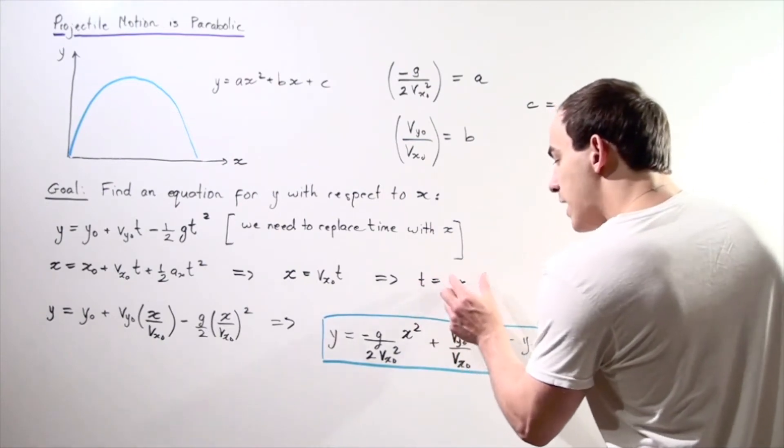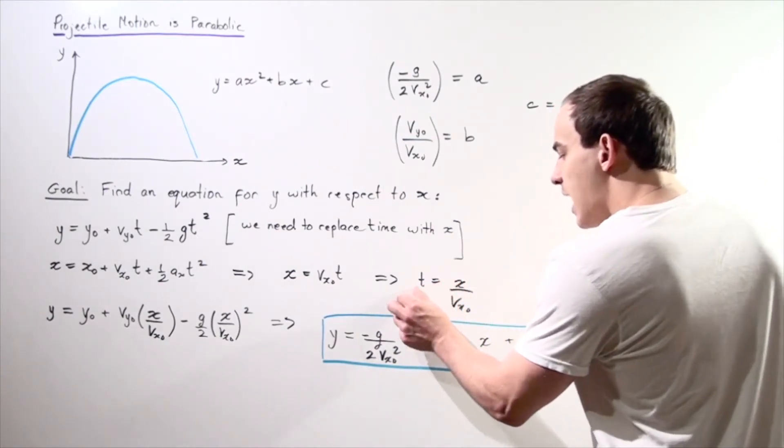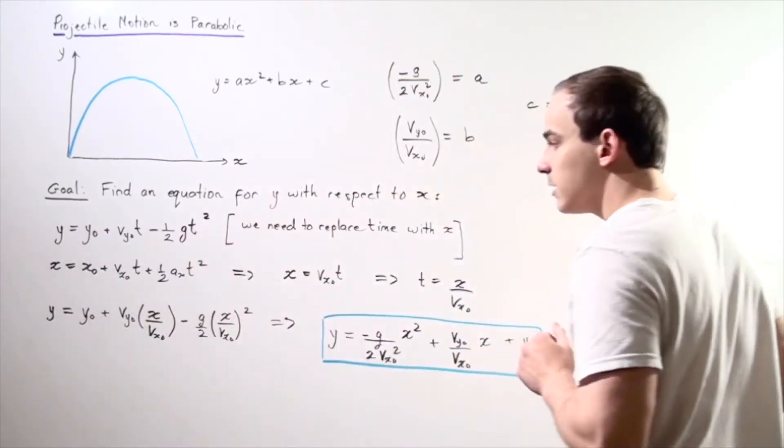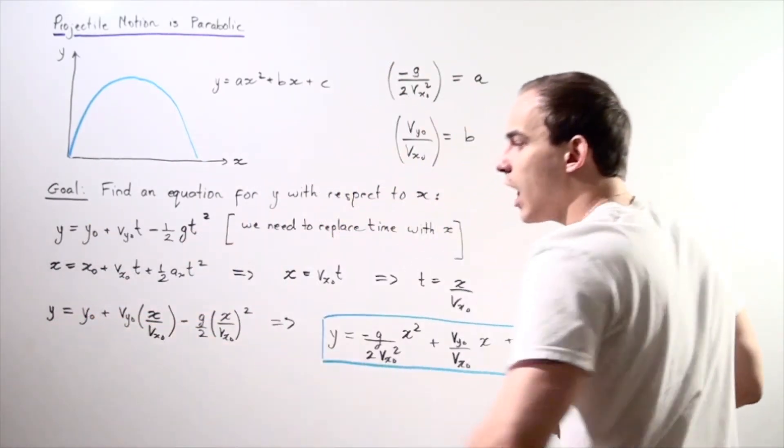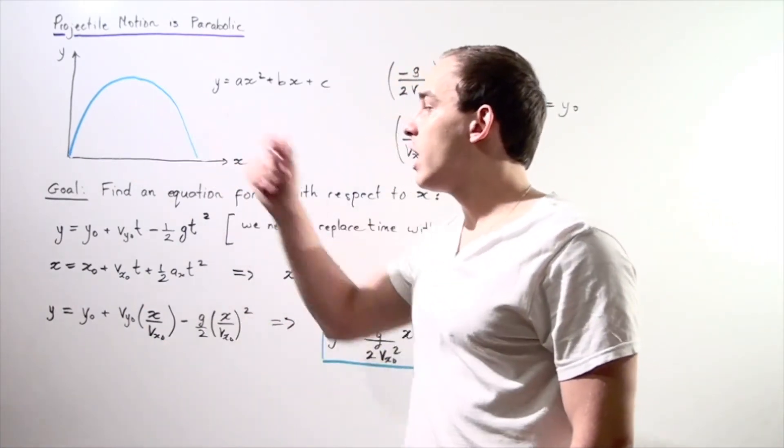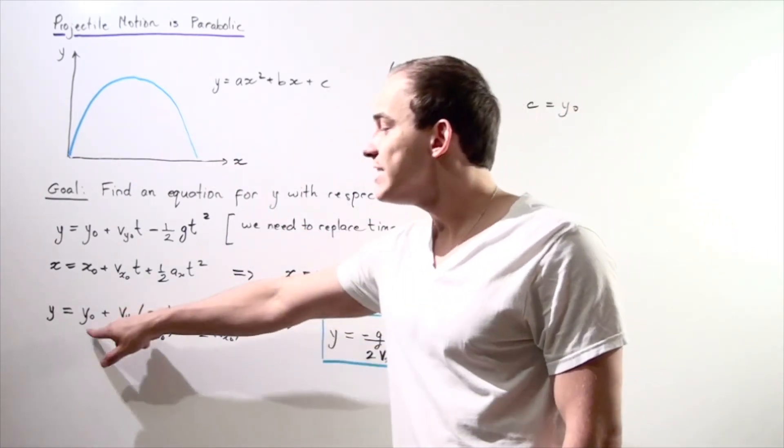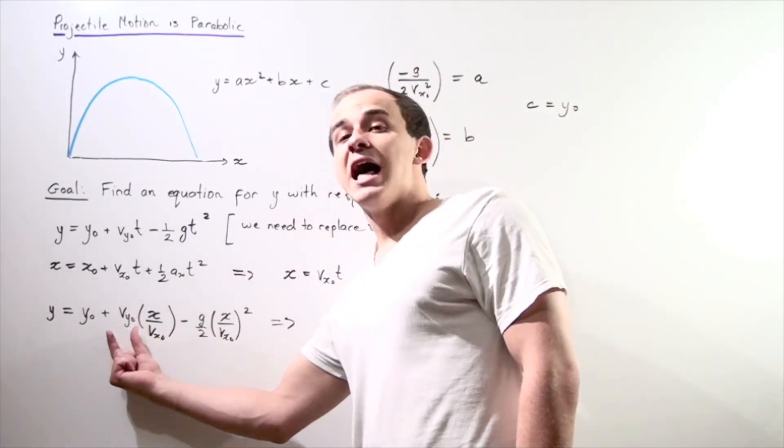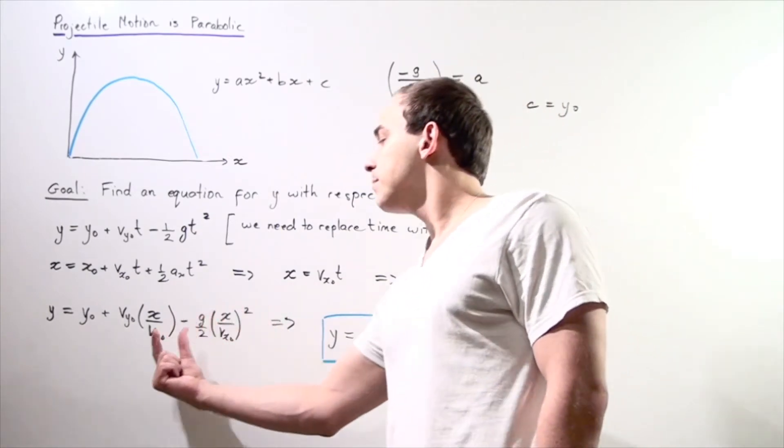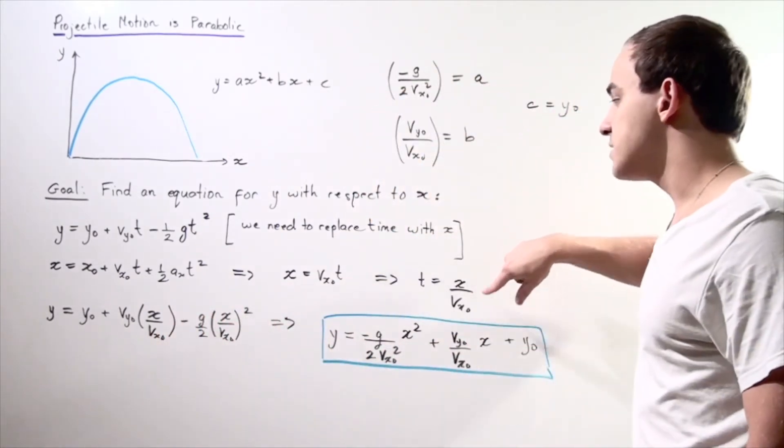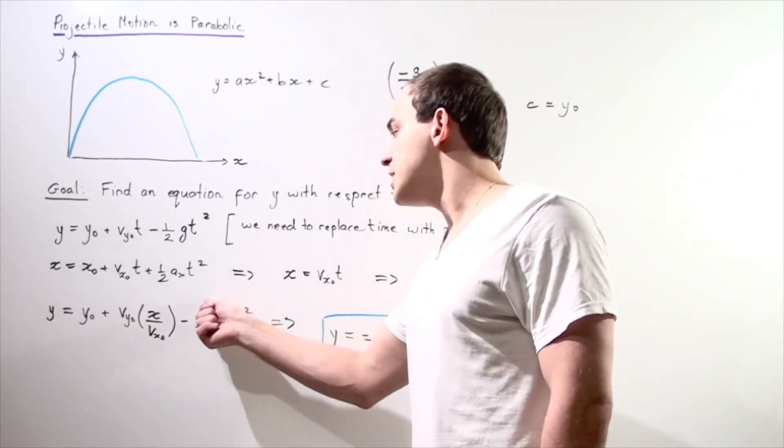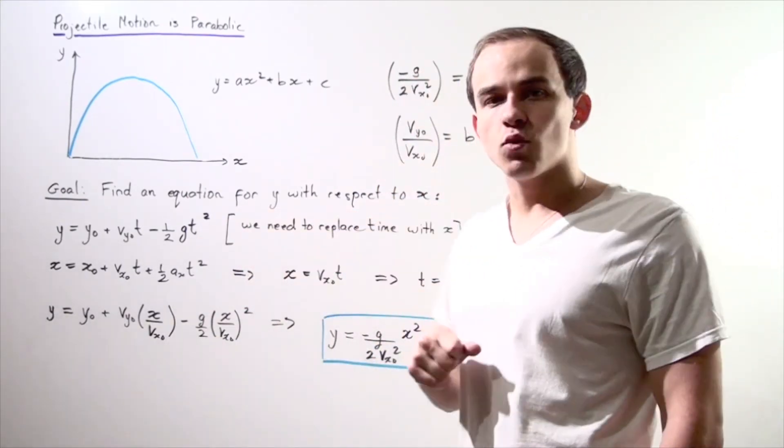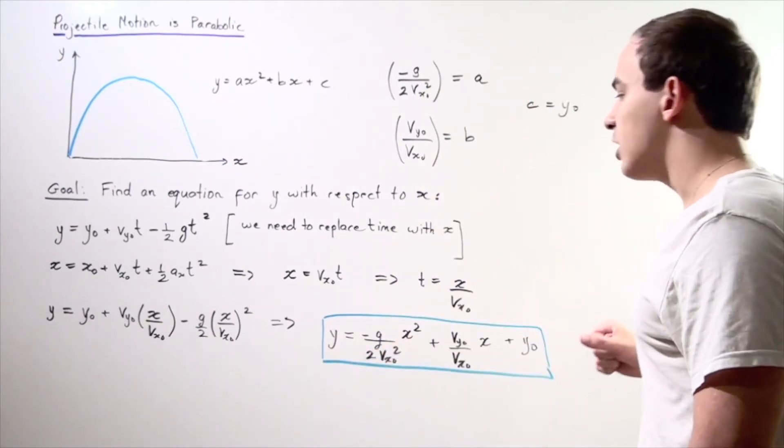So now we take this equation, which is equivalent to time, and we plug it into our initial equation in this section here. So we get the following result: our final position along the y-axis is equal to our initial position along the y-axis plus our velocity along the y-axis multiplied by—we simply plug in this value—minus g divided by 2, and now we plug in this value into time and we square it.